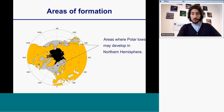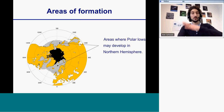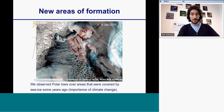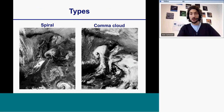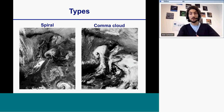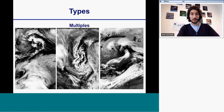I will briefly show the areas of formation for the Northern Hemisphere. We can see that they develop everywhere near the North Pole with open sea areas. Some of these formation areas are connected with climate change and the retreat of sea ice. I will show some examples of the different types of polar low — including a common cloud shape — and there are multiple systems that can form in a cluster, with several storms in close vicinity.